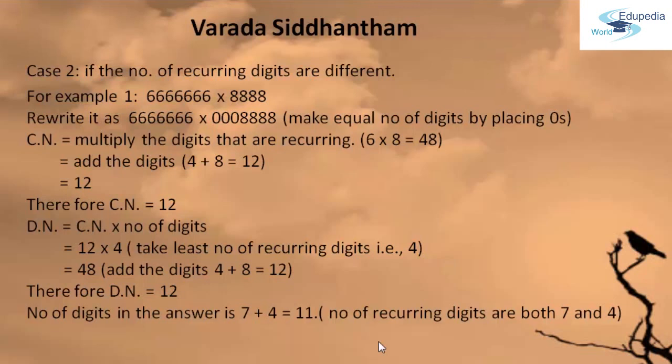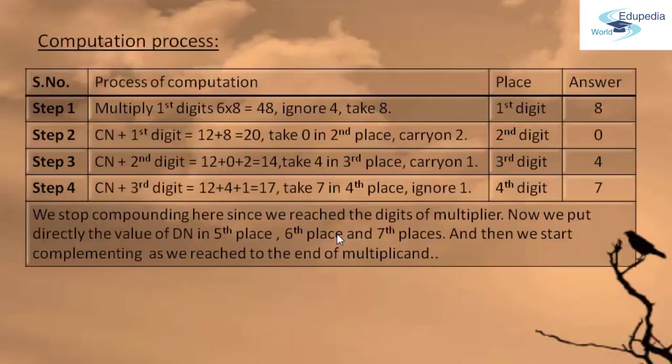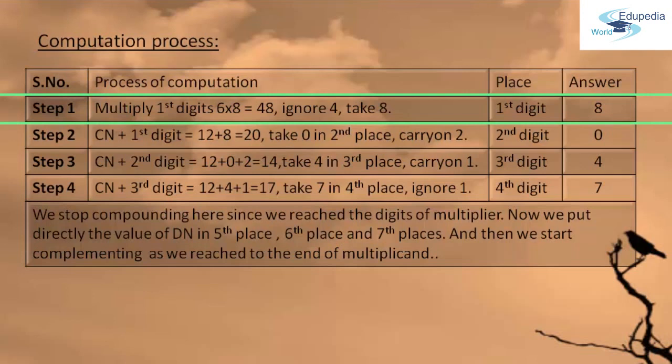Now let us see the process of how to use Case Number 2 Varda Siddhantam Sutram in finding the product for the given example. Observing the table very closely — in Step 1, we have multiplied the digits that are recurring. So 6 into 8 gives 48. It is a two-digit number, so we ignore 4 and take 8.